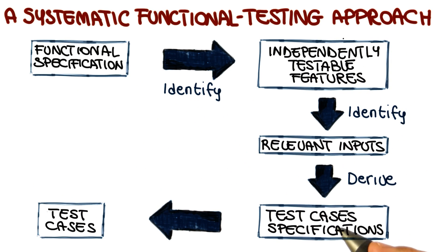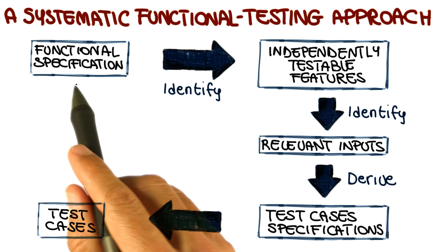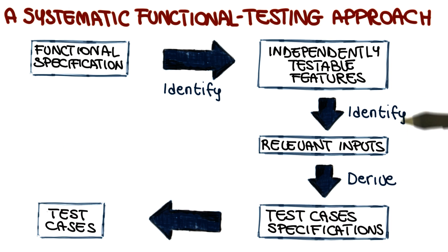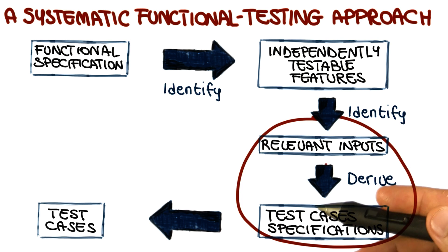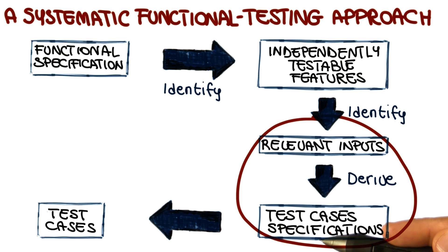Now let's go back to our systematic functional testing approach and all the steps in this process. So far we've seen the first step and the second step. Now we're going to look at this step in which once we have identified the values of interest, we derive test case specifications for these values or using these values.